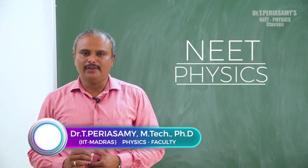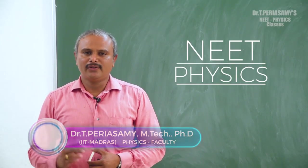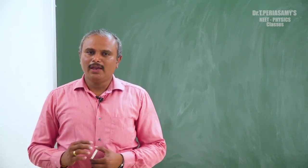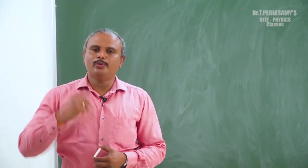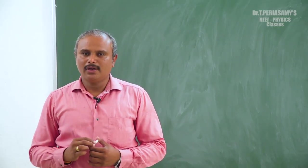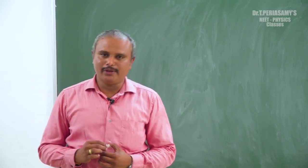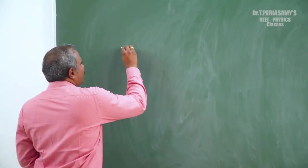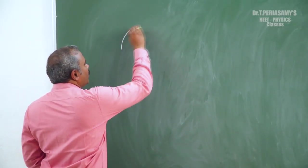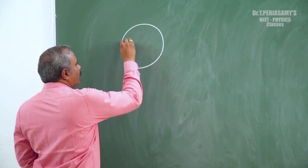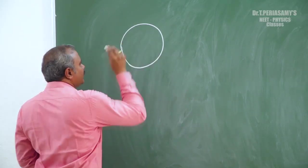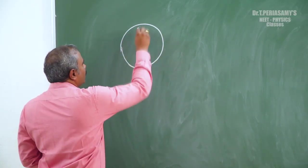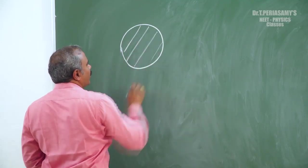What are truncated bodies? Center of mass of the truncated bodies. If you remove a part from a body, how does the center of mass change? For example, there is a complete disk.